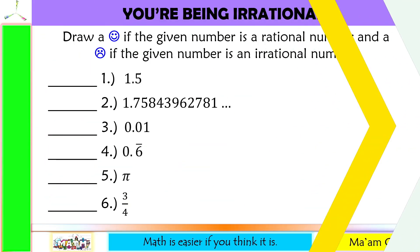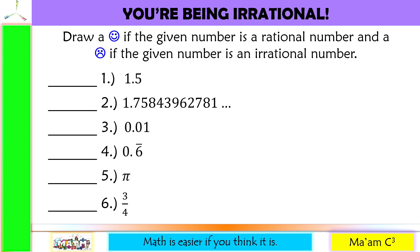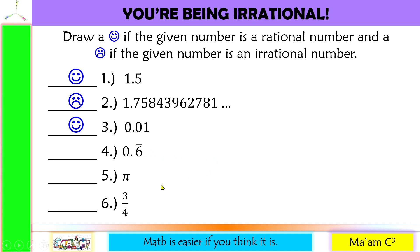Let's have a quick activity. Draw a happy face if the given number is a rational number, and a sad face if the given number is an irrational number. Number one is a happy face. Number two — remember these ellipses? This means these numbers will never stop, so it is a sad face. Number three is a happy face. Number four — remember the vinculum? It means six will repeat forever, so this is a happy face. Number five is pi, which is a sad face, an irrational number. Number six, three over four, is a happy face.